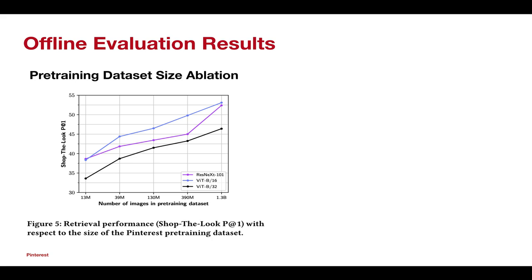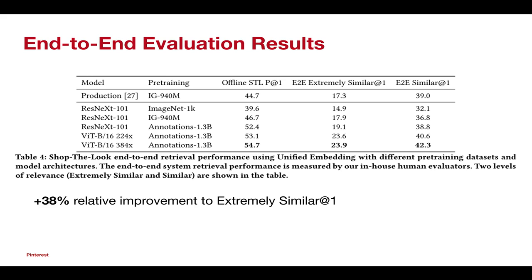We also see that the retrieval performance improves as the pre-training dataset size is increased. While the CNN-based architecture has an advantage over ViT at the scale of 13 million images, the ViT-based model outperforms the CNN-based model as the dataset size is increased.